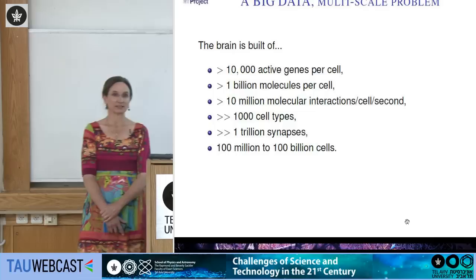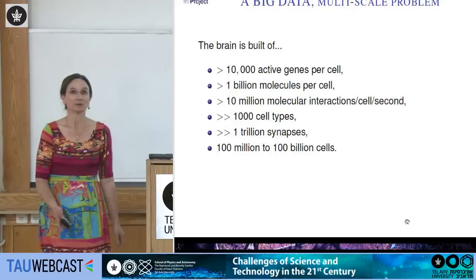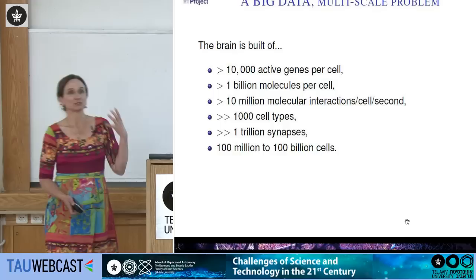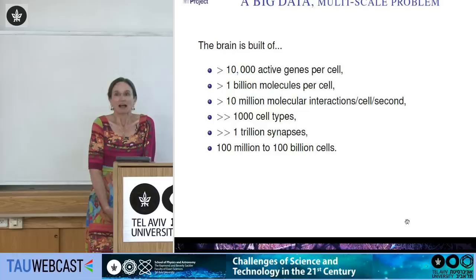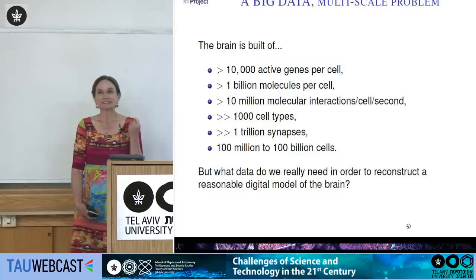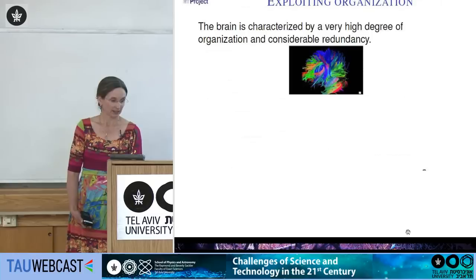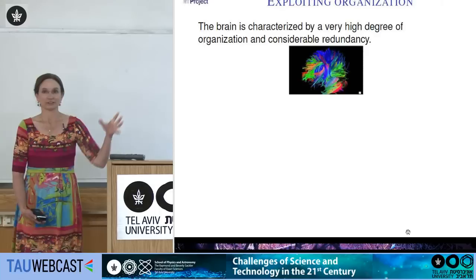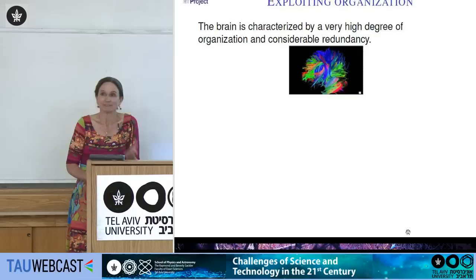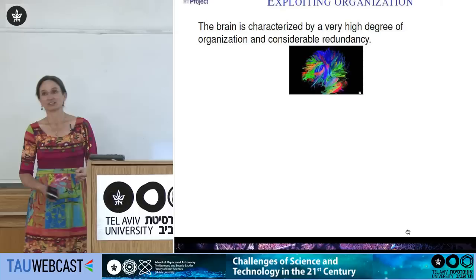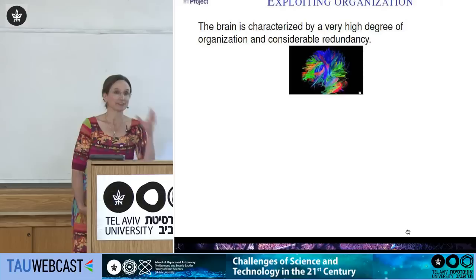The problem is that this is not just a big data problem — it's a huge data problem. The numbers associated with building a model of the brain seem way out of scale. Fortunately, the brain is highly organized. If it weren't, we wouldn't be capable of learning anything. We have a very high degree of organization and redundancy, which means you don't actually have to capture or measure everything about the brain in order to model it properly.